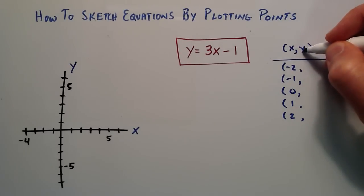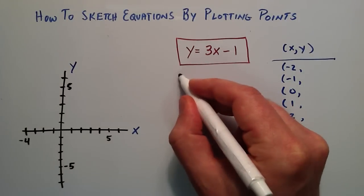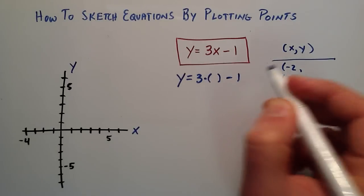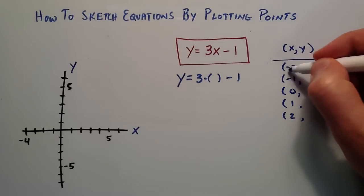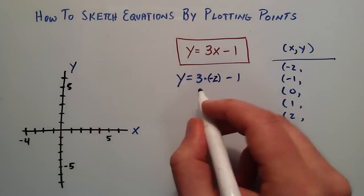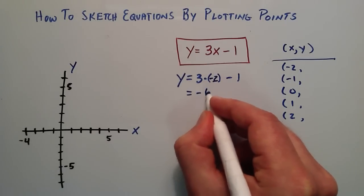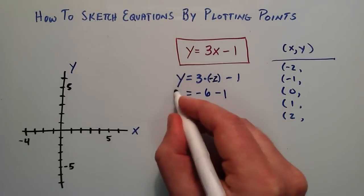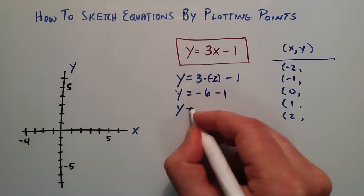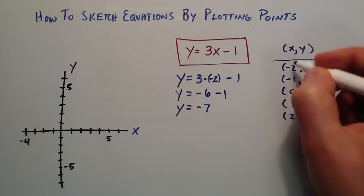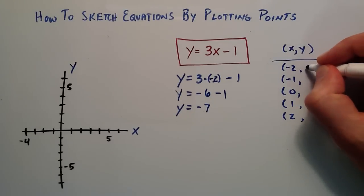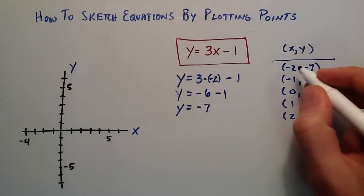When x is equal to negative 2, let's figure out the corresponding y component. We write y equals 3x minus 1, so y equals 3 times negative 2 minus 1. 3 times negative 2 is negative 6, then we subtract 1, so y equals negative 6 minus 1, which is negative 7. So when x is negative 2, the corresponding y value is negative 7.